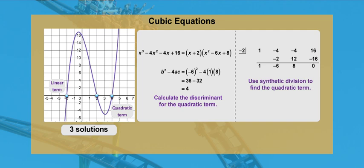When solving polynomial equations of degree three, start by graphing the function to identify the linear term. Then use synthetic division to find the quadratic term. Then use the discriminant on the quadratic term to see if there are additional factors.